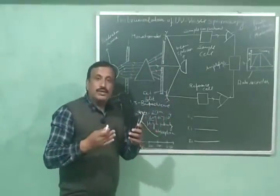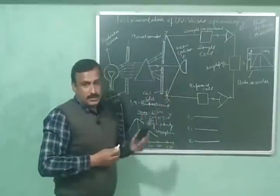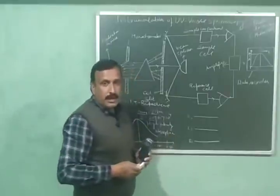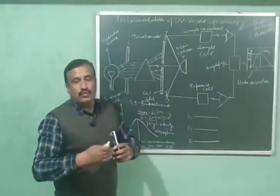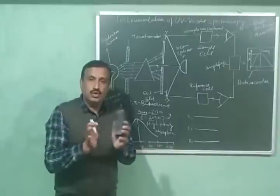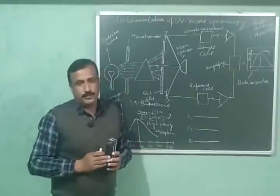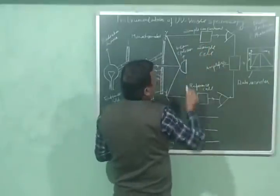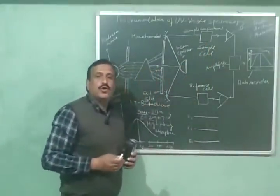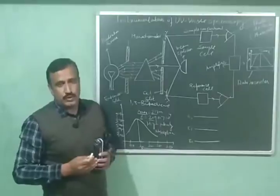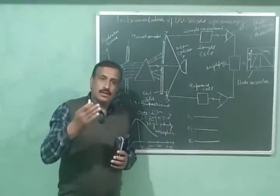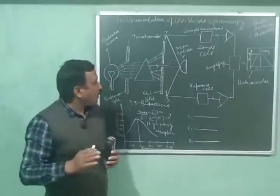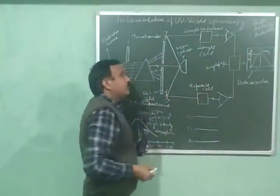Only one wavelength is selected from the exit slit. That radiation is allowed to fall on the beam splitter, which splits it into two beams of equal intensity. The first beam is passed through the sample cell, containing a solution of the sample in a suitable solvent — the compound whose UV-visible spectrum we want to study.